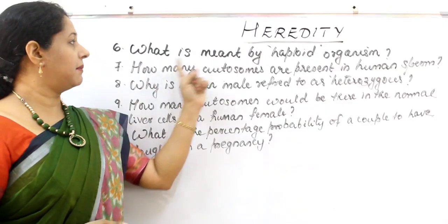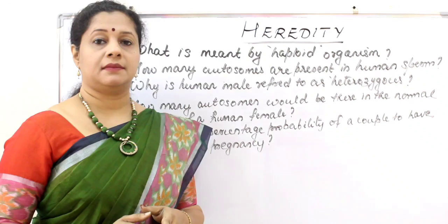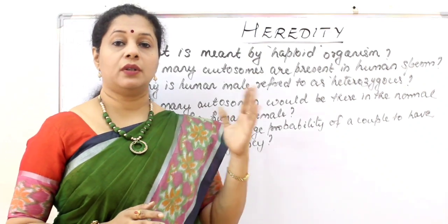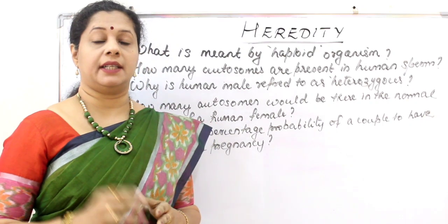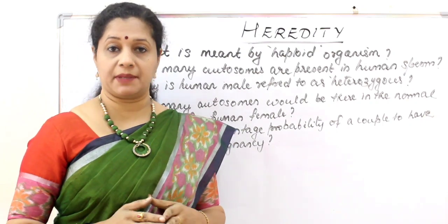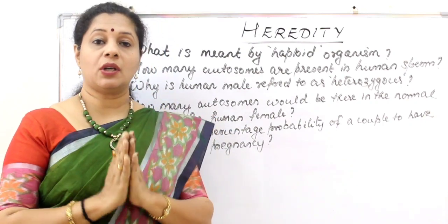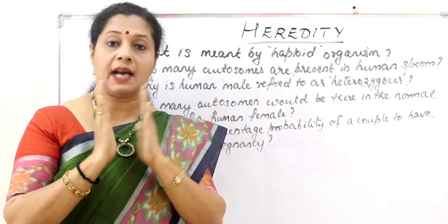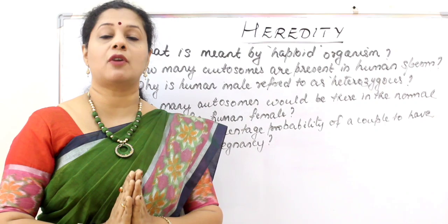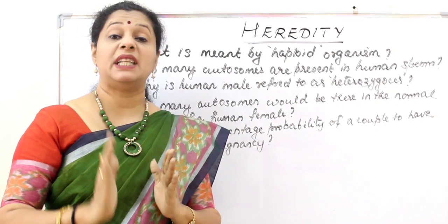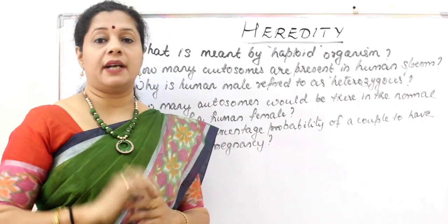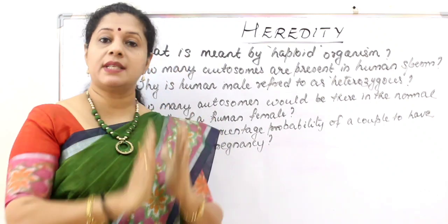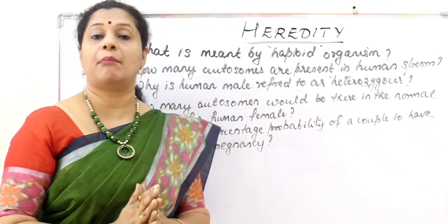What is meant by a haploid organism? In our cells there are two sets of chromosomes — one from the father and one from the mother, contributed through gametes. There are 23 pairs of chromosomes; that condition is diploid. One set is haploid.